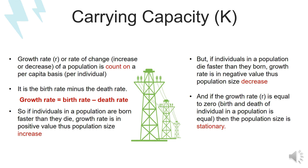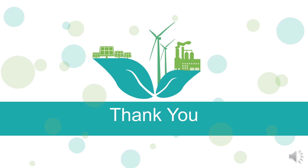The growth rate, or rate of change of the population, is counted on a per capita basis. Growth rate equals birth rate minus death rate. If individuals are born faster than they die, the growth rate is positive and the population size is increasing. If individuals die faster than they are born, the growth rate is negative and the population is decreasing. If the growth rate equals zero, births equal deaths and the population size is stationary. Thank you for listening.